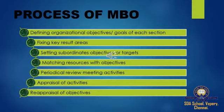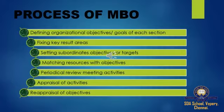The sixth point is periodical review meetings. Meetings must be periodically held between the superior and subordinate to discuss the progress in the accomplishment of objectives. Accomplishment means something that has been achieved successfully. The fixed standards may be changed in the light of progress.